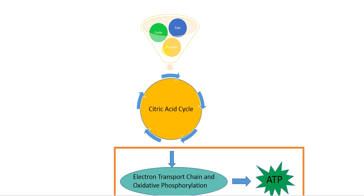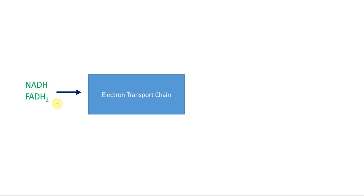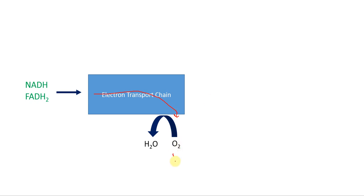So let's get to the electron transport chain. After our metabolites have gone through the citric acid cycle, we follow those products to the electron transport chain and oxidative phosphorylation. The NADH and FADH2 carry those high energy electrons to the electron transport chain. The electrons move through the chain and eventually come to an end, and we need a place for them to go. That's where oxygen comes in — oxygen picks up these electrons, and it's what we call a terminal electron acceptor.